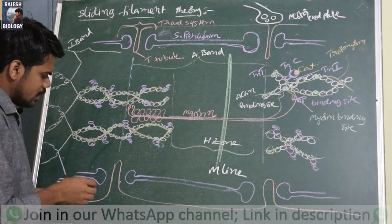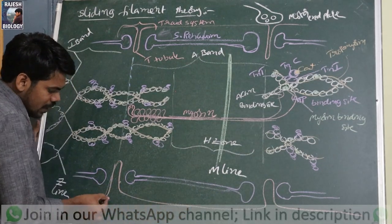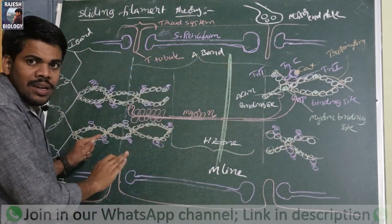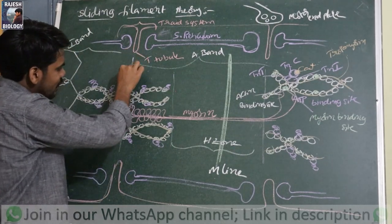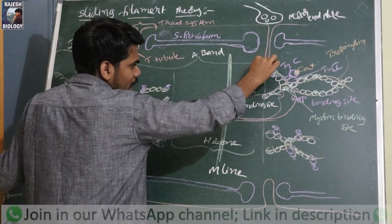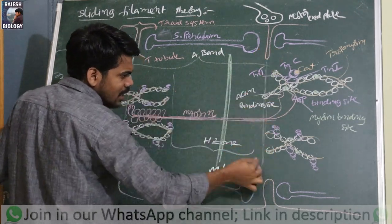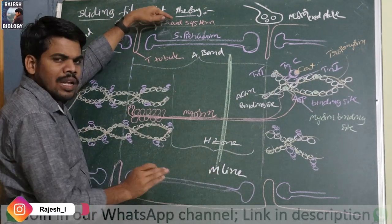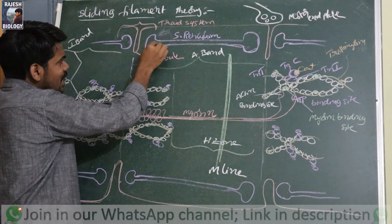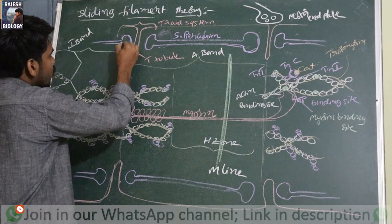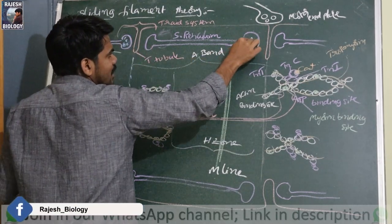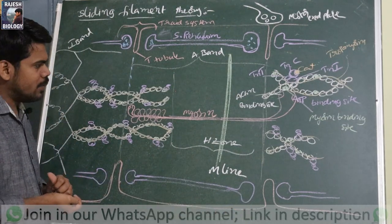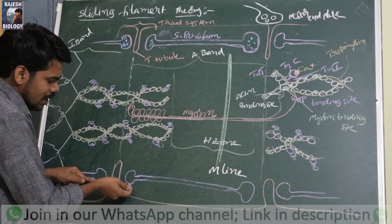Now I'll label this diagram. This is the sarcolemma, and this is the T-tubule. This is a mammalian skeletal muscle fiber, so the T-tubule is at the level where actin and myosin are in contact — the T-tubule is on either side at that place. Along the length of the plasma membrane, sarcoplasmic reticulum is also present. This portion is the terminal cisternae, where a larger amount of calcium is stored.